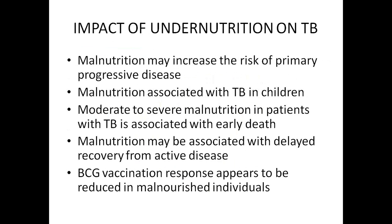The impact of undernutrition on tuberculosis: Vulnerability to progression from TB infection to active TB is related to macronutrient deficiencies that induce impairment of cellular immunity, and this impairment is found to be rapidly reversed with nutritional rehabilitation. Children with severe protein malnutrition are at higher risk for developing tuberculosis. Some evidence suggests that low birth weight and exposure to malnutrition in early childhood might predispose to increased vulnerability to TB. Moderate to severe malnutrition in patients with TB is associated with high risk of early death, and can also delay recovery time. It has also been found that BCG vaccination response appears to be reduced in malnourished individuals.